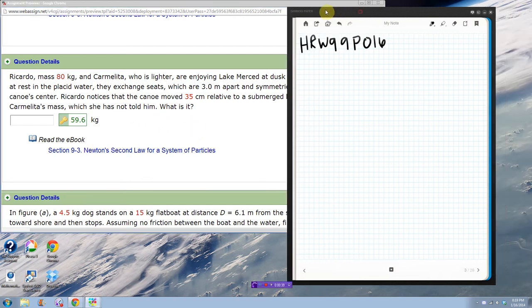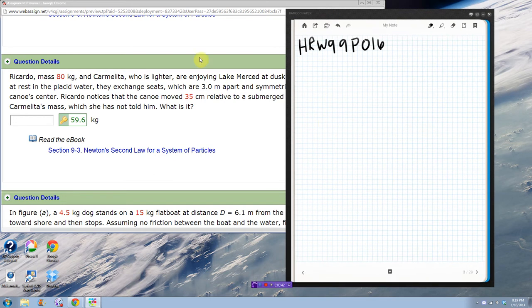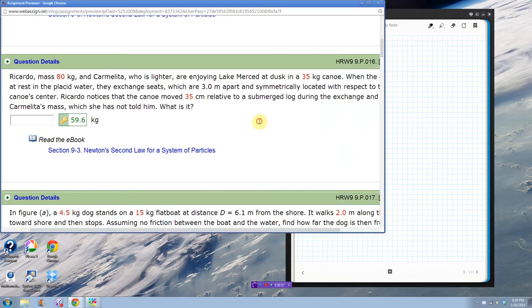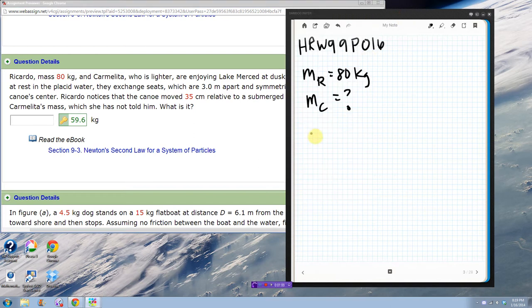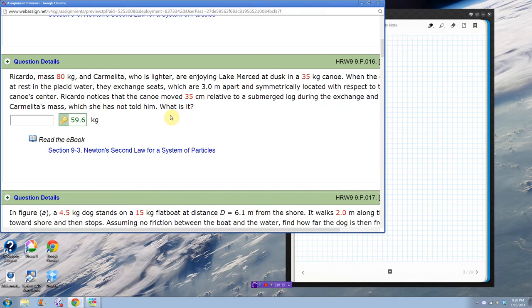Okay, so let's see, I'm going to get down the pertinent information so I can go full screen. I know that the mass of Ricardo is 80 kilograms. I don't know what the mass of Carmelita is, so I'm going to make that a question mark. I also know that the canoe, dang, I already used C. The mass of the canoe, I'm using the last letter of canoe, is 35 kilograms.